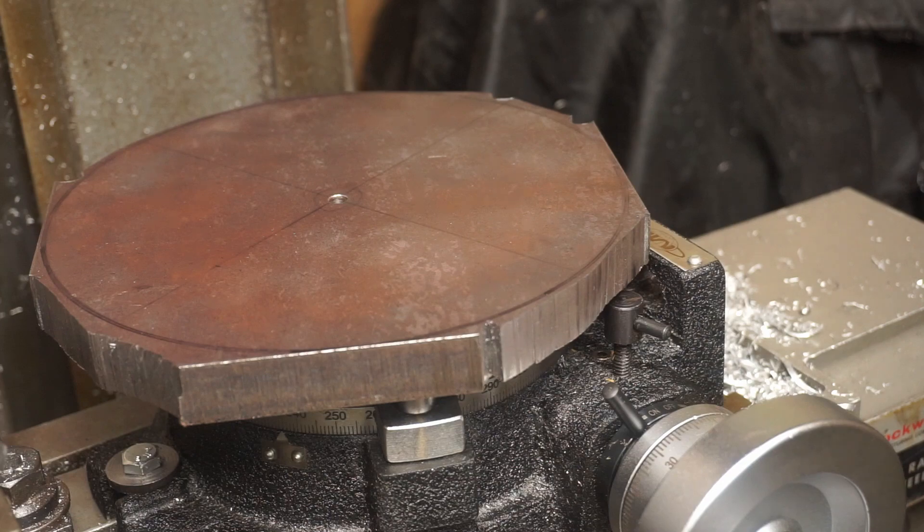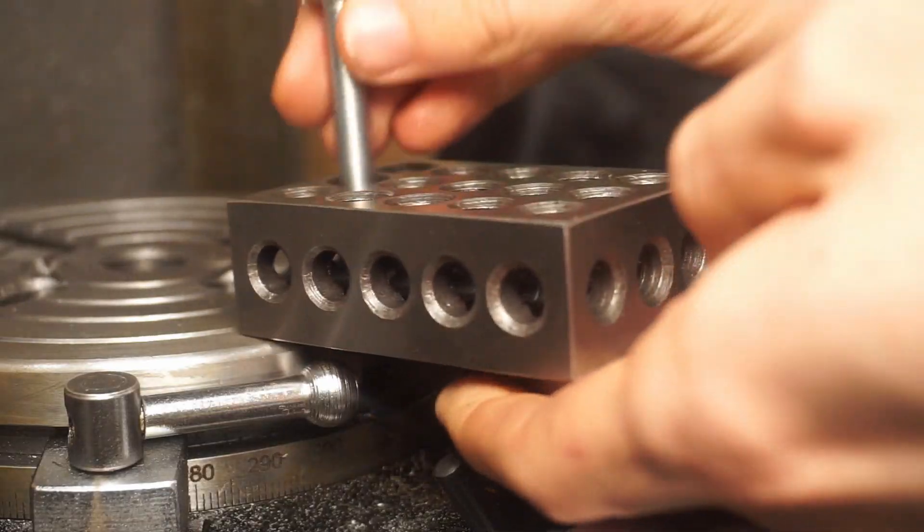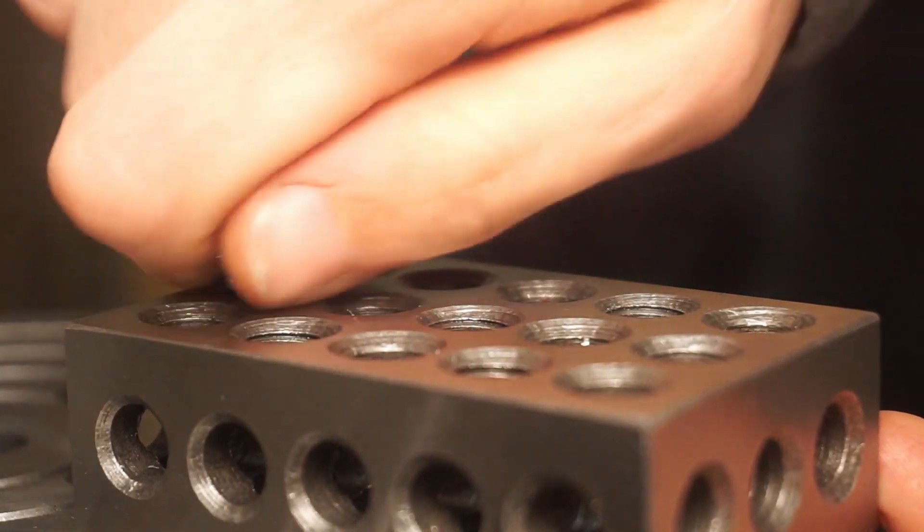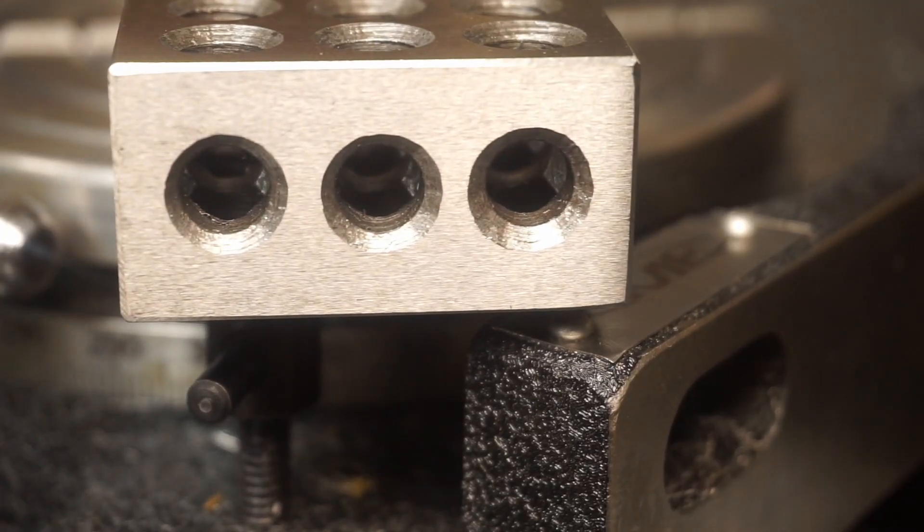I bolted some 1-2-3 blocks to the rotary table, giving it outriggers that were larger in diameter than my piece. Another important thing to consider, I had very little clearance underneath of the blocks.